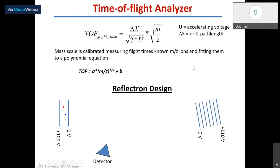One thing is that even within — even if two ions are of the same m/z value — they may have slightly different kinetic energies.